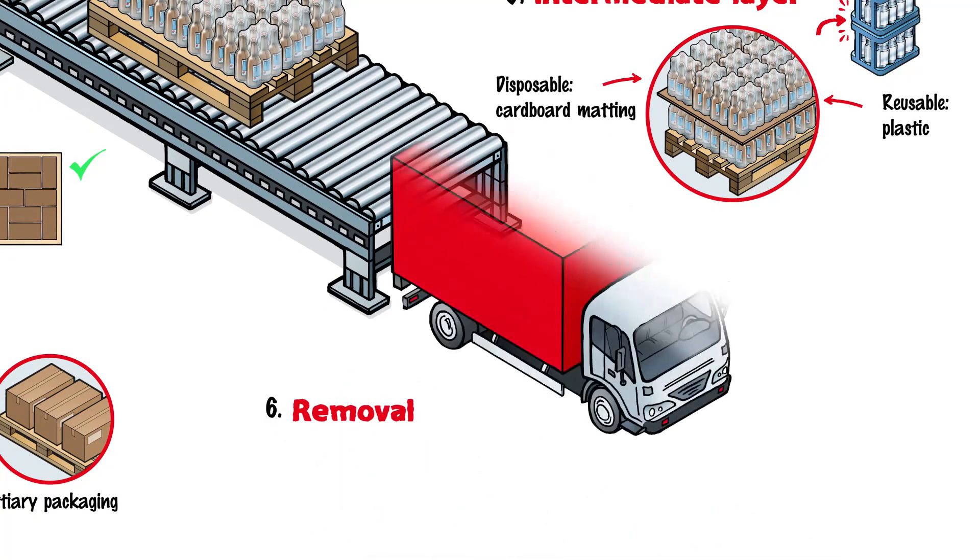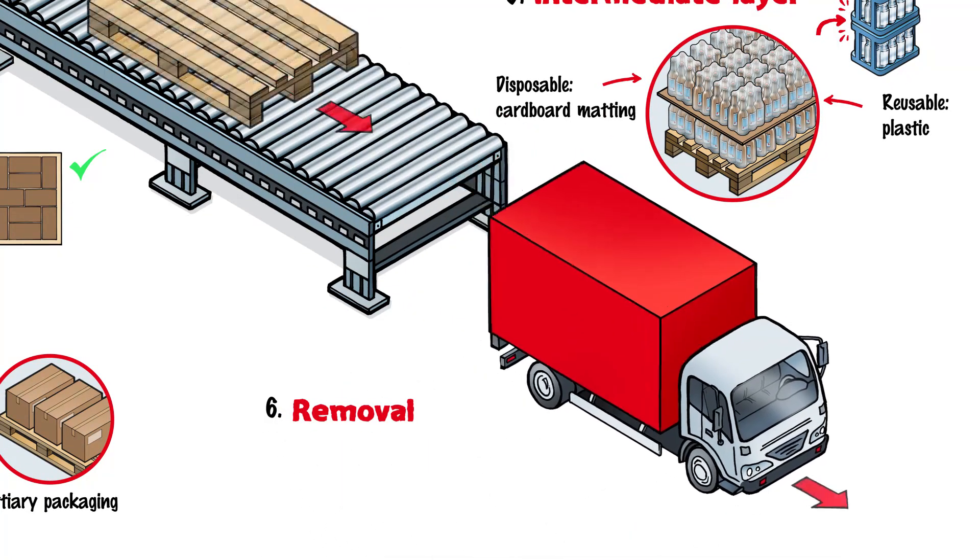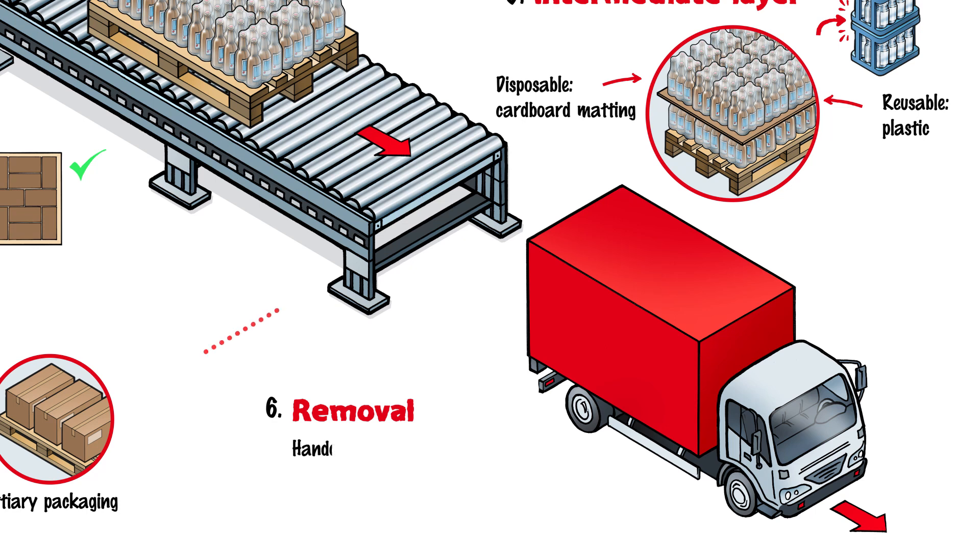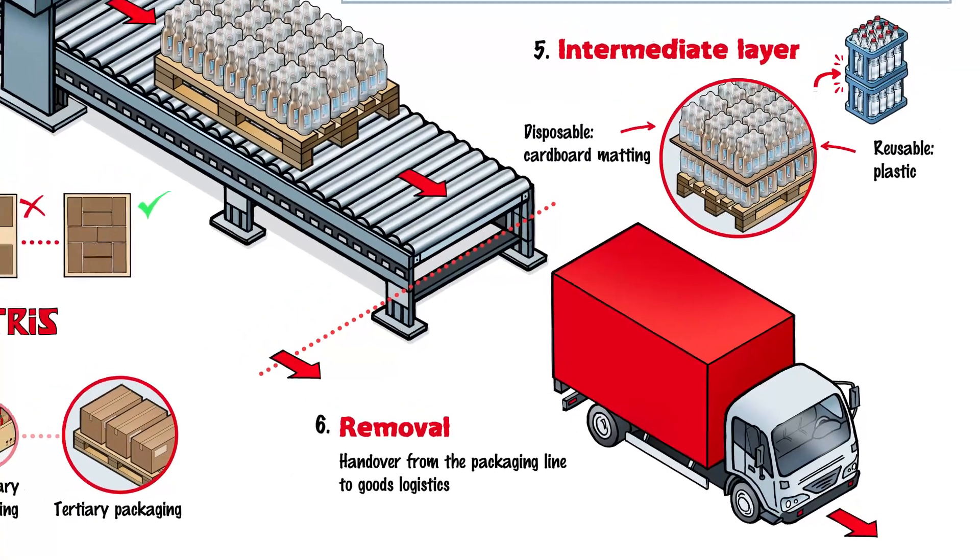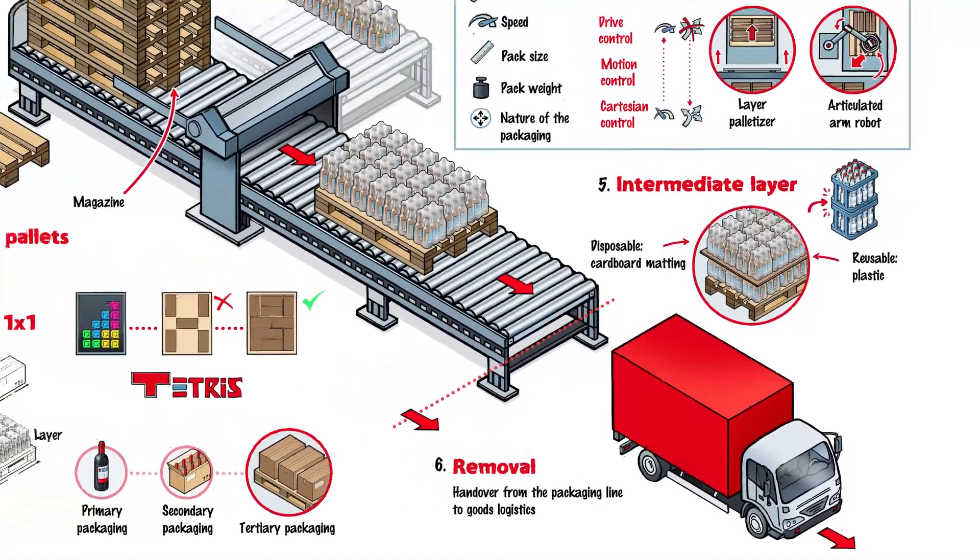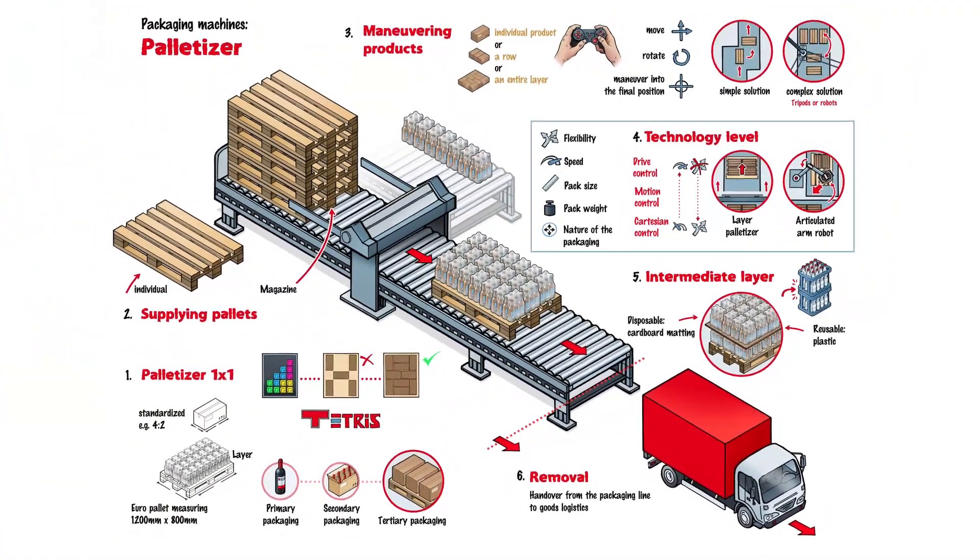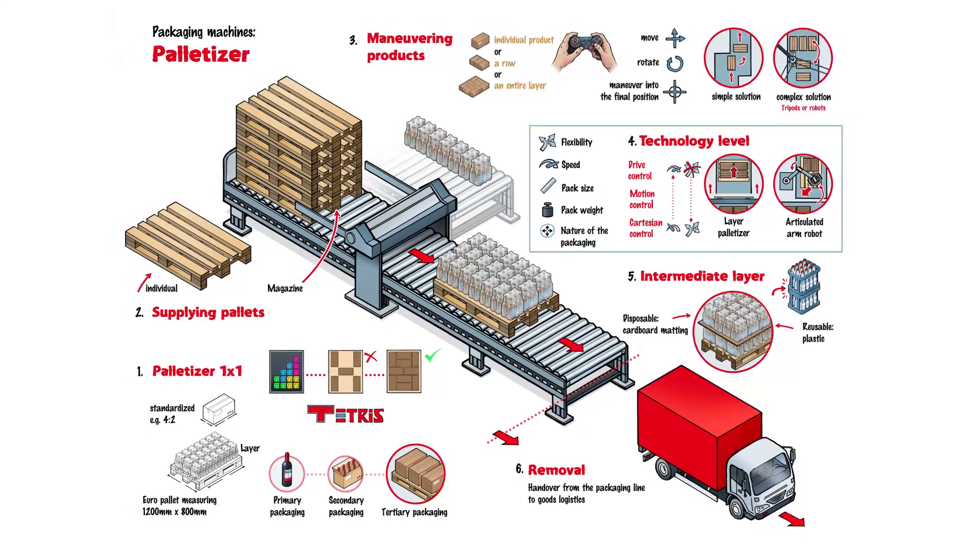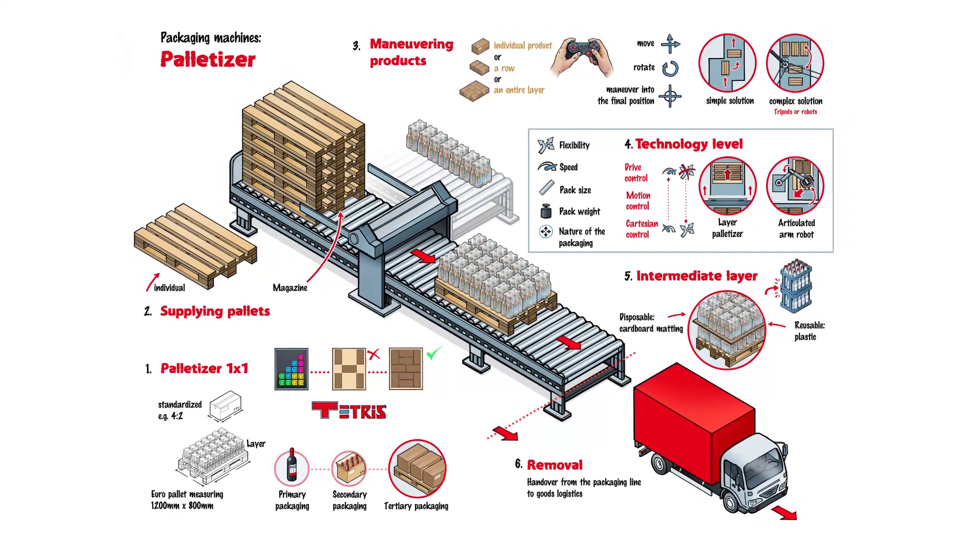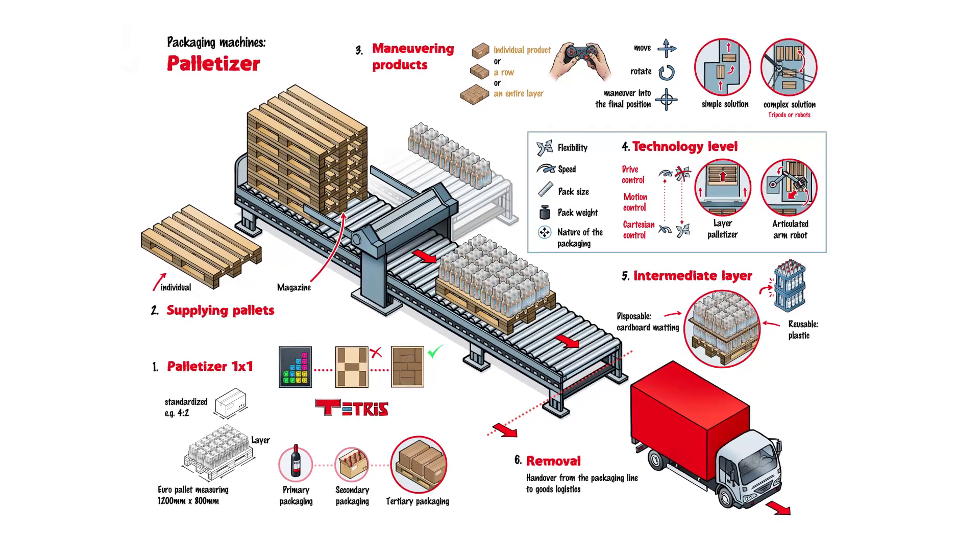The final step is to take away the fully packed pallet. This marks the handover from the packaging line to goods logistics. Extremely simple horizontal materials handling technology that can handle relatively high loads is used at this stage. Today's palletizing systems need to be increasingly versatile and highly automated. New robot technologies are upgrading or replacing traditional, inflexible systems.